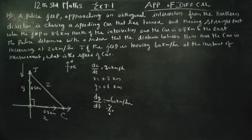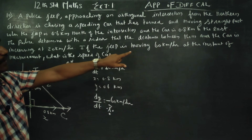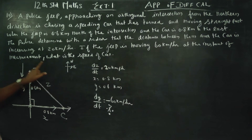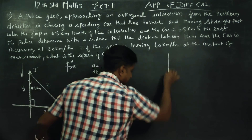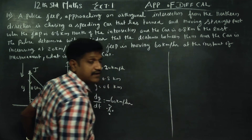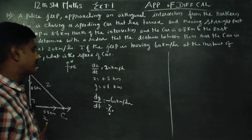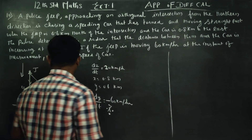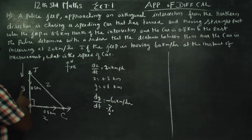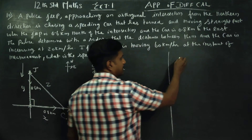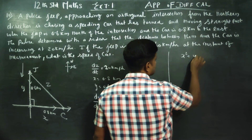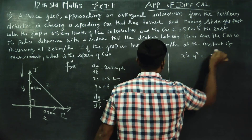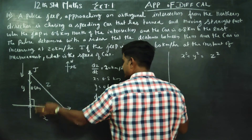At the instant of measurement, what is the speed of the car? We need to find dx/dt. I am going to write Pythagoras' theorem: x² + y² = z².